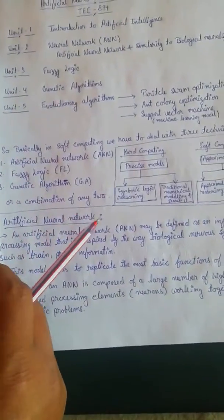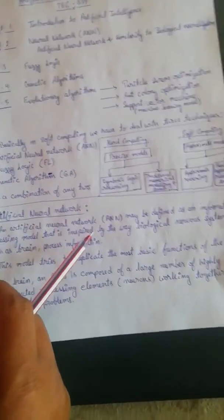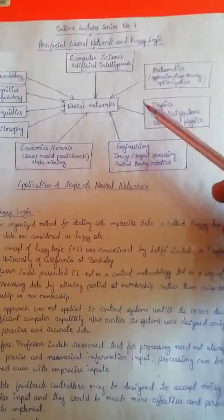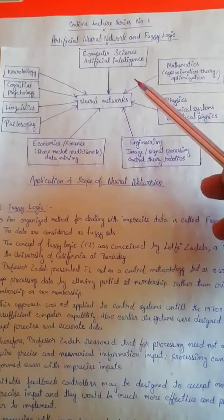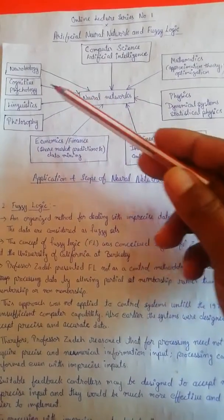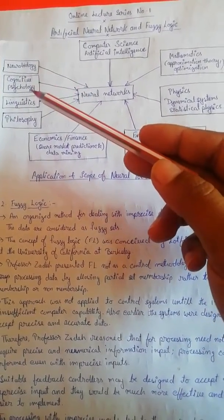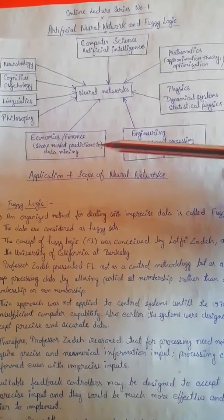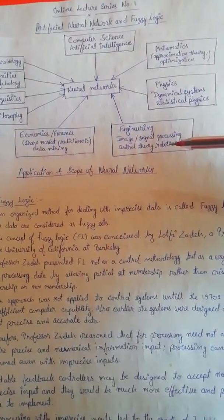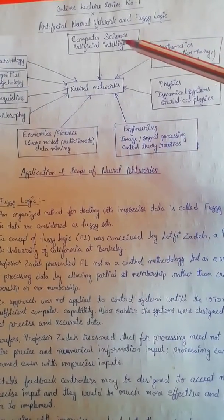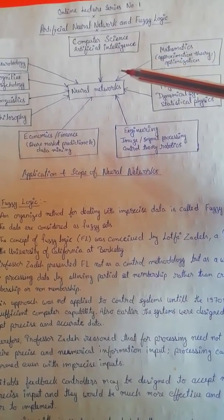If we talk about the application part of artificial neural network, you can see there are a lot of applications. You can use it in neurobiology, cognitive psychology, linguistics, philosophy, economics, engineering, physics, mathematics, or computer science as artificial intelligence.